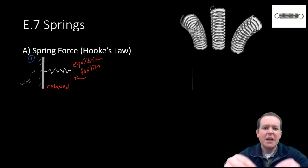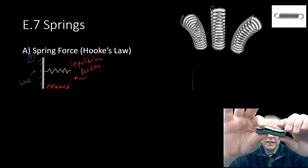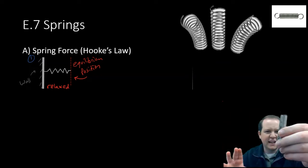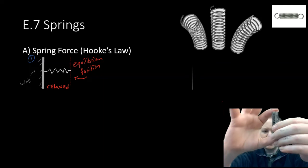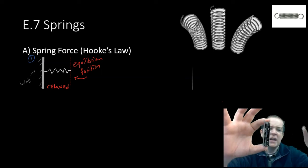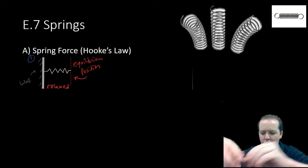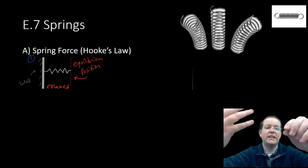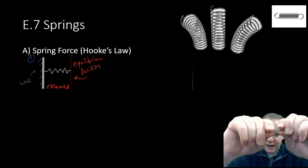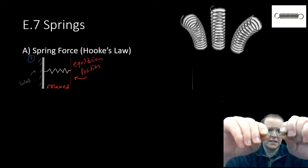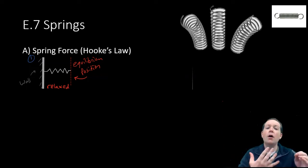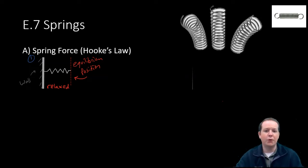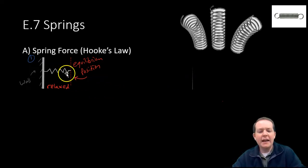When I squeeze it together, I obviously feel a force in the opposite direction — a repelling force. And likewise, if I take this same spring and try to pull it apart, I feel some resistance, almost like a tension force. The spring wants to go back to where it was. There is another type of spring called extension springs. These can't actually be compressed from their starting point, but in either case they apply forces on objects.